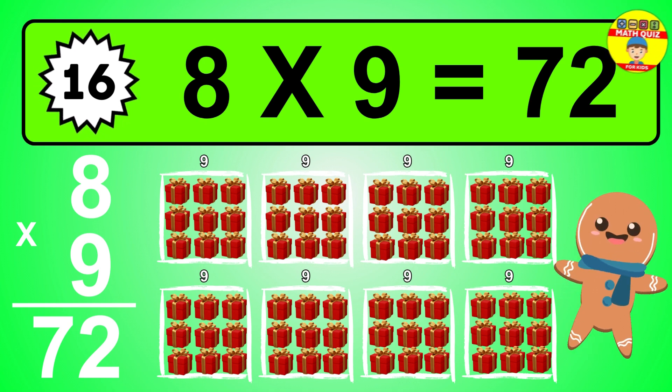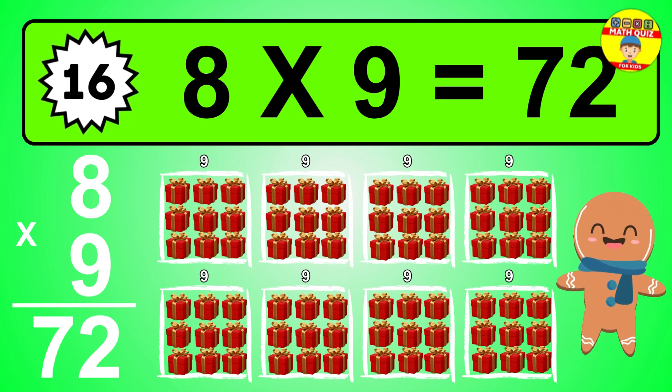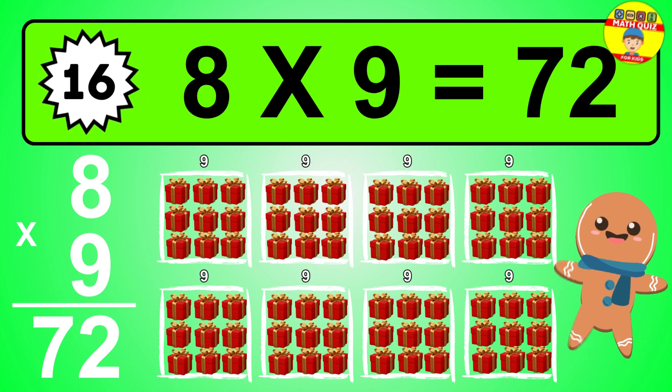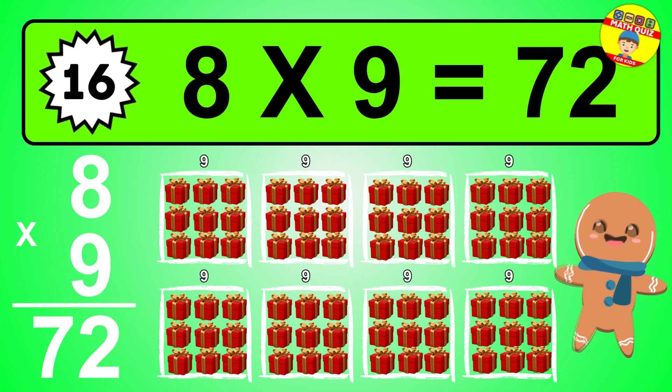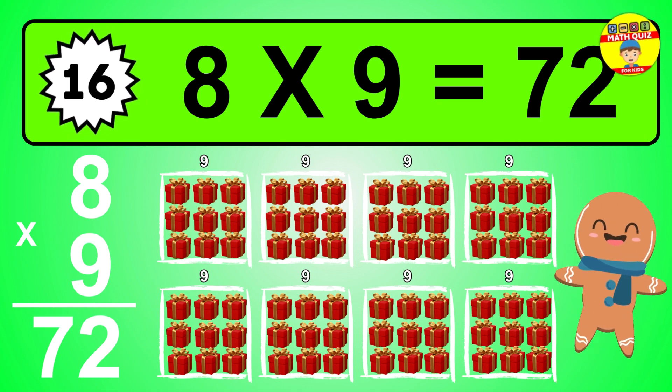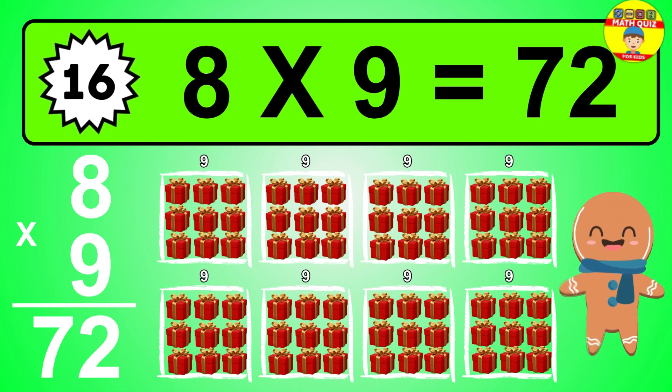To calculate, we have eight groups with nine balls each one. So how many balls do we have? Seventy-two balls.